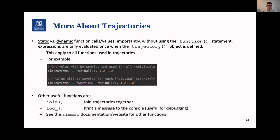And then other useful functions are join, to sort of glue trajectories together, and the log function, which allows you to print messages to the console, and it's very useful for debugging. And there's heaps of other things to look at on the website, but I think these are the most important ones.